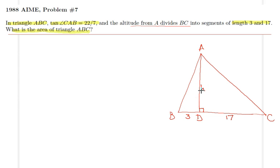We are given that tangent of CAB is 22 over 7. CAB is the whole angle here. We realize that it consists of two angles, we can call them alpha and beta. Therefore, 22 over 7 equals tangent of CAB, which is the same as tangent of alpha plus beta.